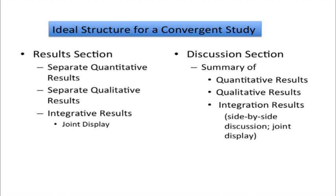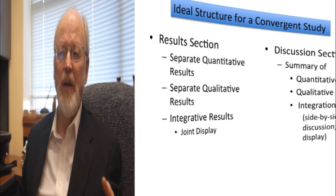What would the structure for a convergent design look like? In the results section, what we'd expect to find in a convergent design project would be a separate section for quantitative research results and a separate section for qualitative research results. But then we would probably also see some attempt by the authors to integrate those two databases — it could be in a table, such as a joint display. In the discussion section, we would see a mirror of these steps: first quantitative or qualitative results, then integration.